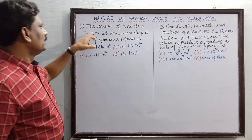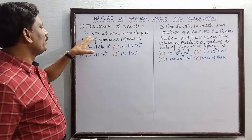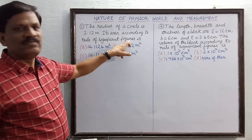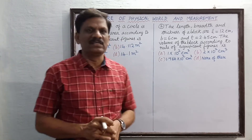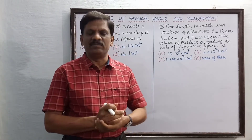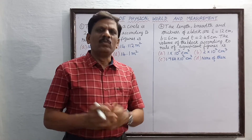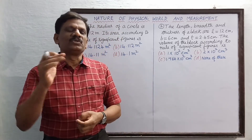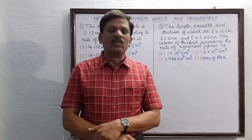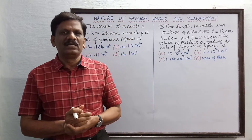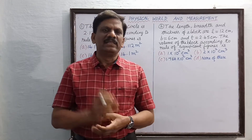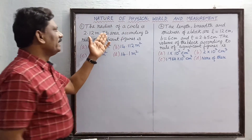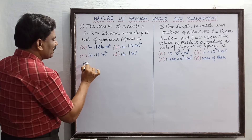The radius of a circle is 2.12 meters. We need to find its area according to the rules of significant figures. Significant figures are the number of meaningful digits in a given number. When multiplying or dividing two numbers, the result must contain the minimum number of significant figures among the given values.